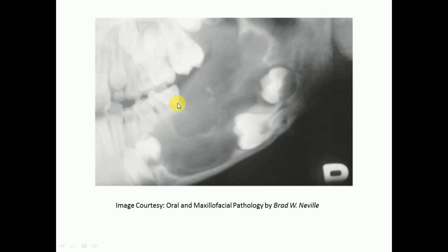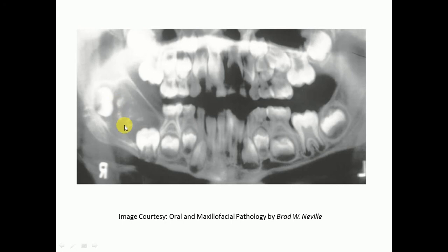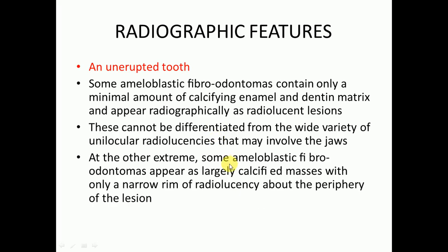These appear radiographically as radiolucent lesions — there can be very large lesions over the mandibular body and angle region with very little radiopaque material, mostly radiolucent. At the other extreme, some ameloblastic fibroodontomas have largely calcified masses with only a narrow rim of radiolucency about the periphery, resembling a mature fibroosseous lesion.